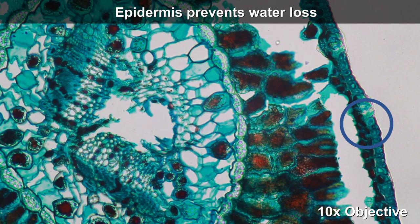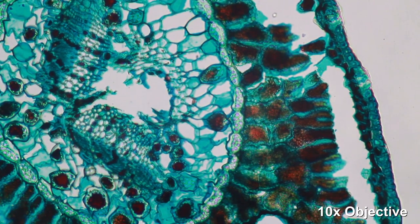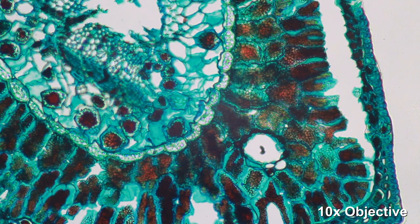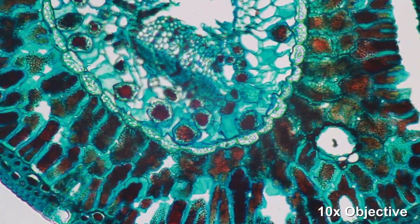Here on the right side, this is the epidermis—the outermost cell layer which protects the pine leaf from too much water loss.